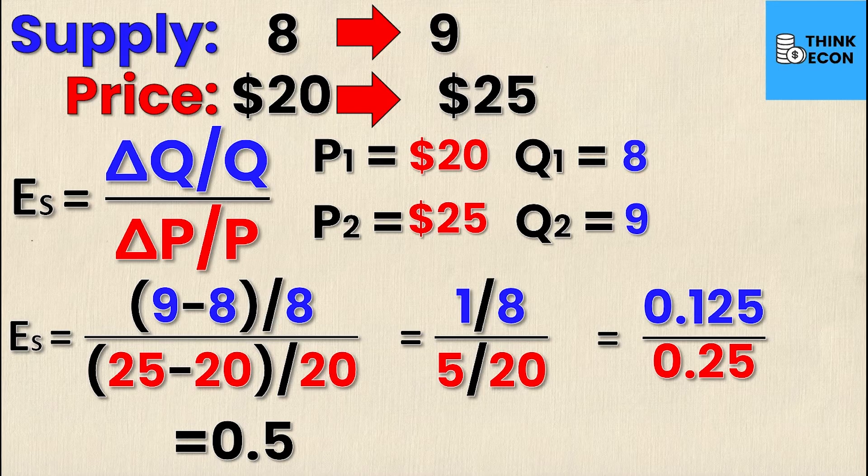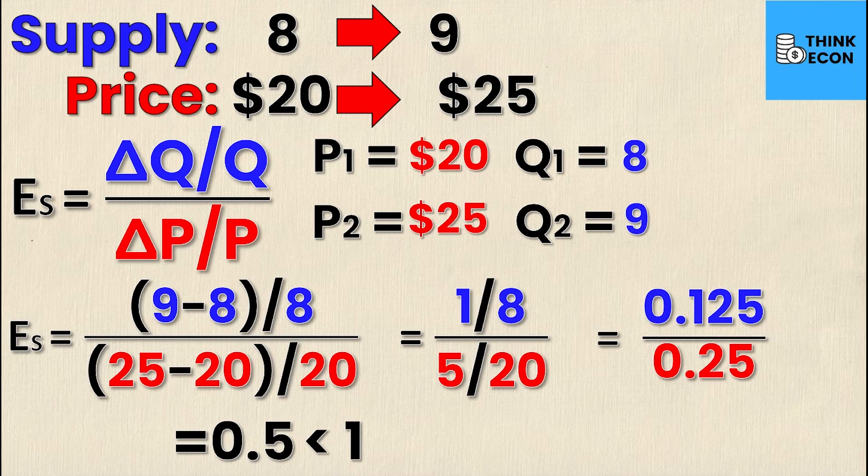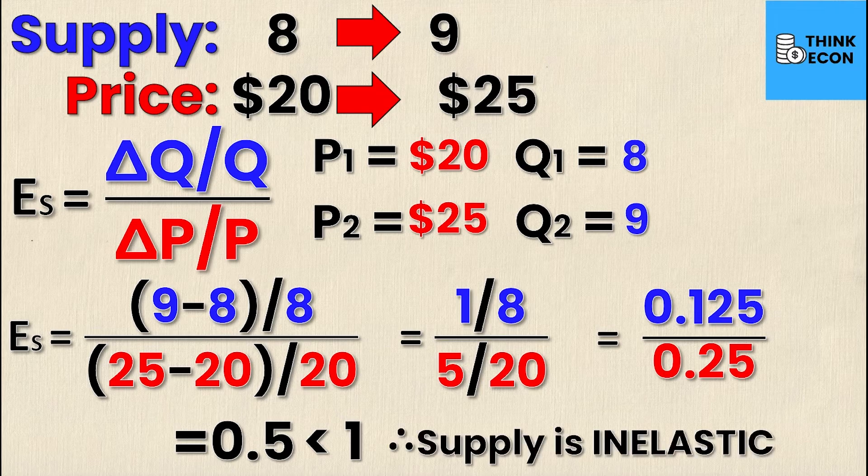Taking the absolute value, 0.5 is less than 1, and therefore supply must be inelastic. And it's as simple as that.